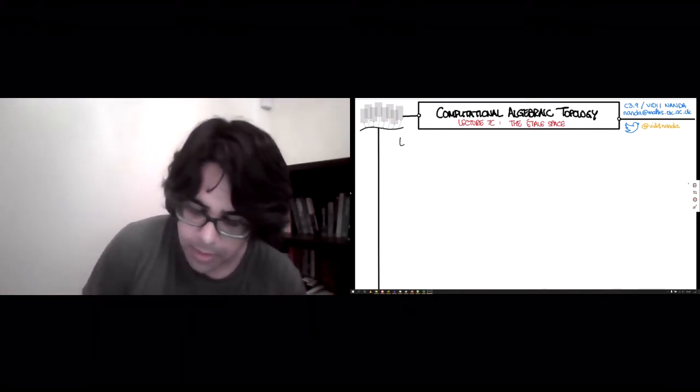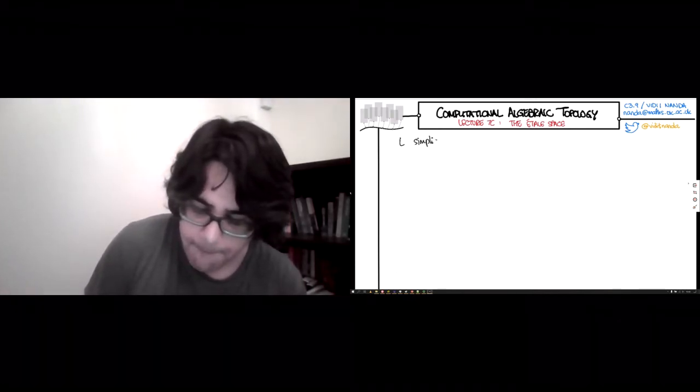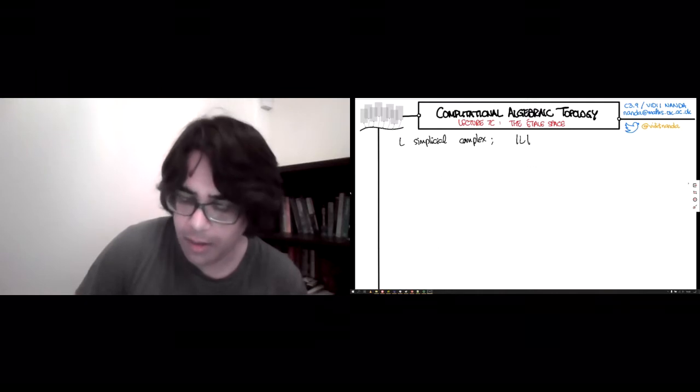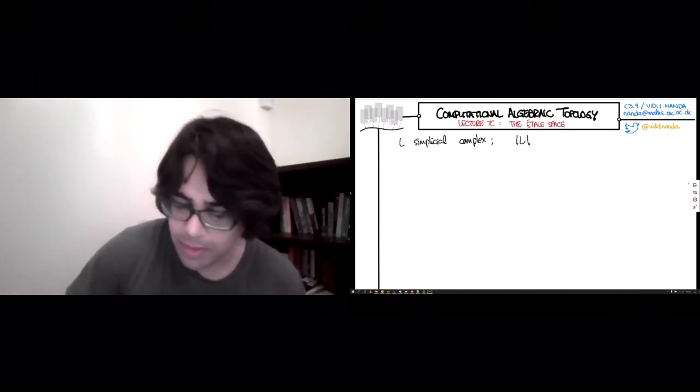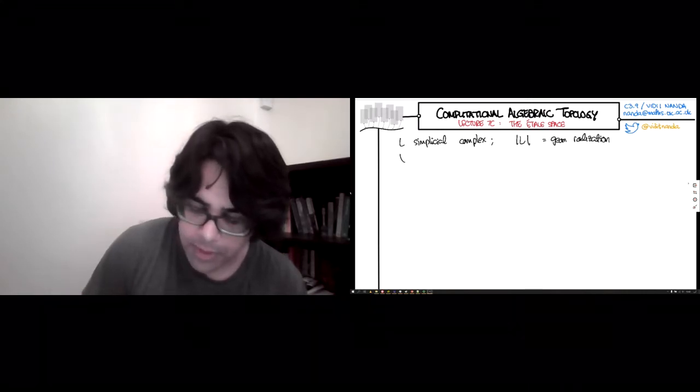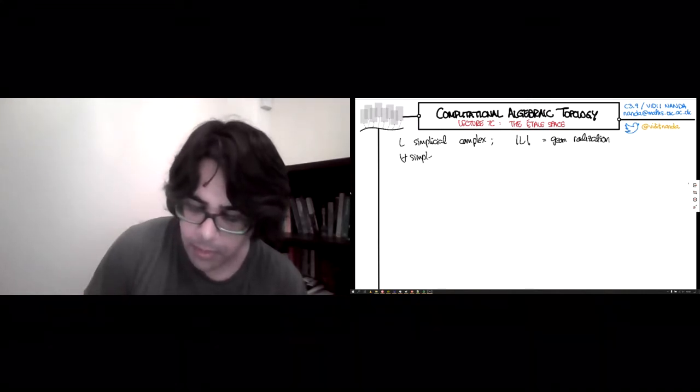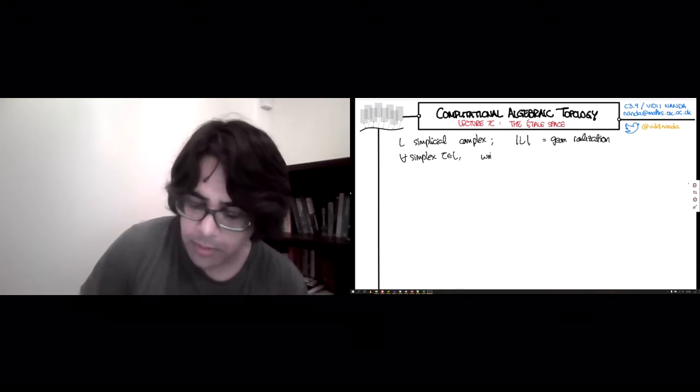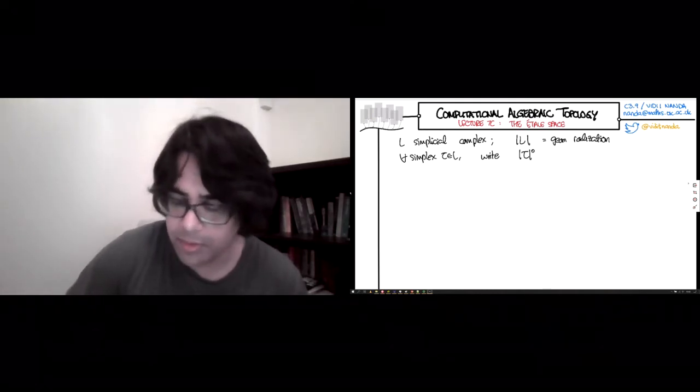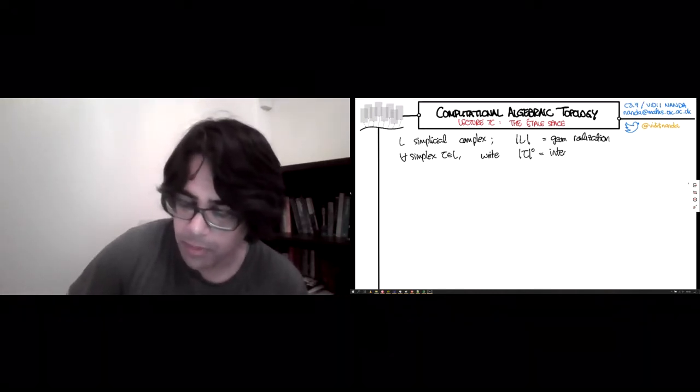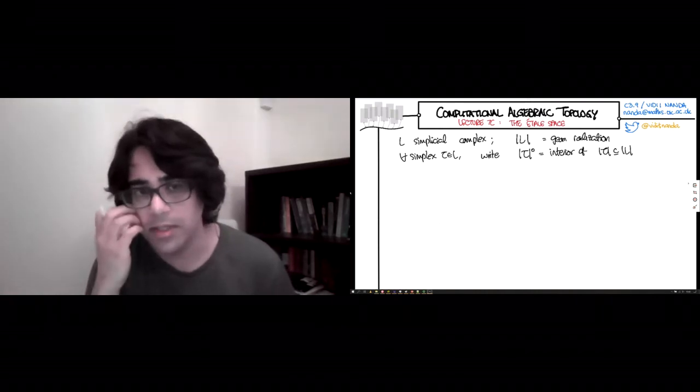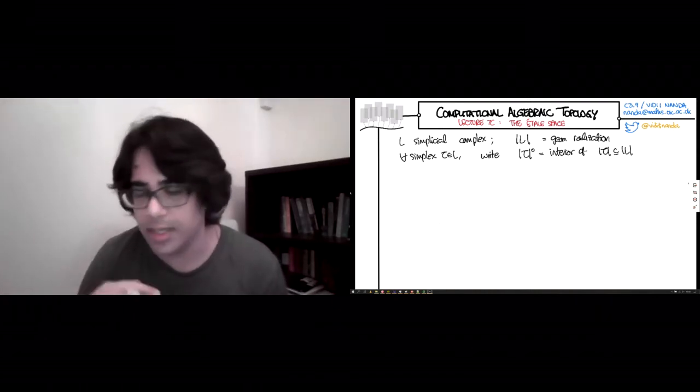If L is a simplicial complex, then remember that this L with the bars is its geometric realization. And for each simplex tau in L, we will write tau support with its interior symbol. So this is the interior of the realization of the simplex within the geometric realization of the entire simplicial complex. This is the open set, so you throw away the boundary.